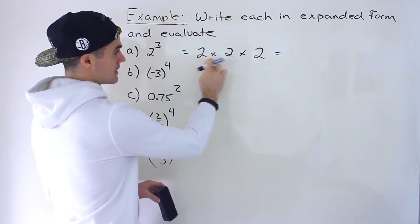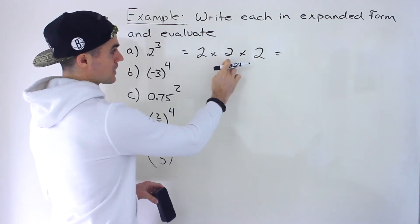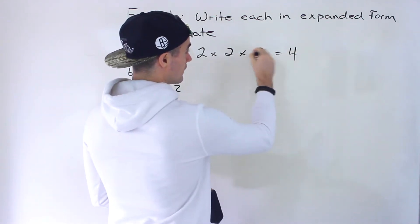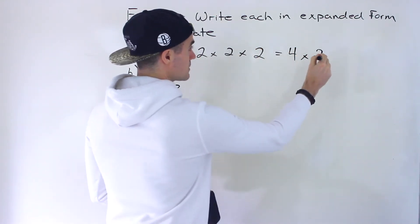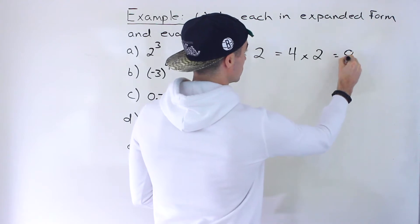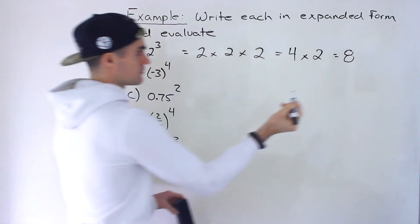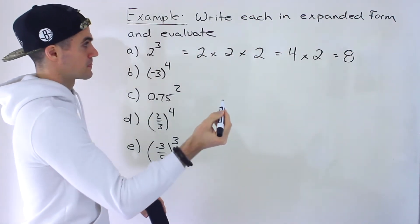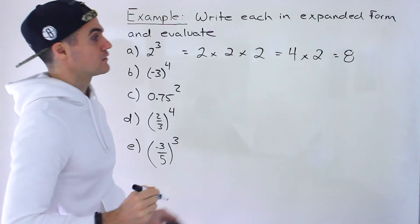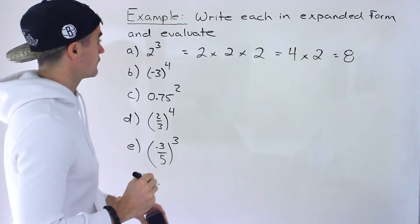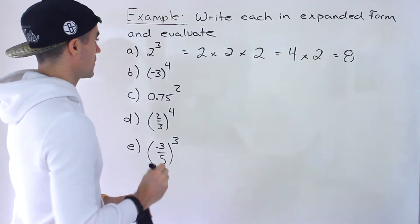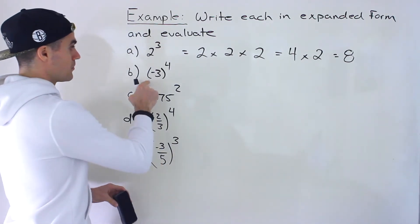Or you could do it in steps. You could go 2 times 2, which gives you 4, and then we still have that times 2 at the end. Then 4 times 2 gives you 8. So that's the expanded form and the final answer after we evaluate. That's part a.